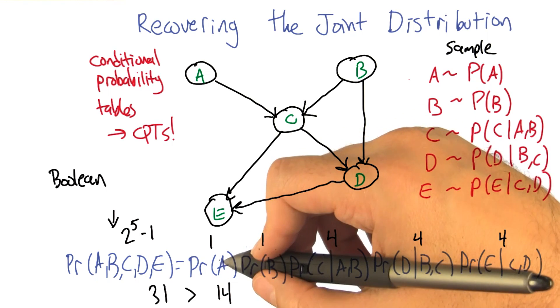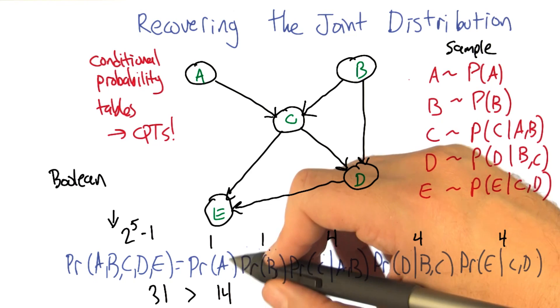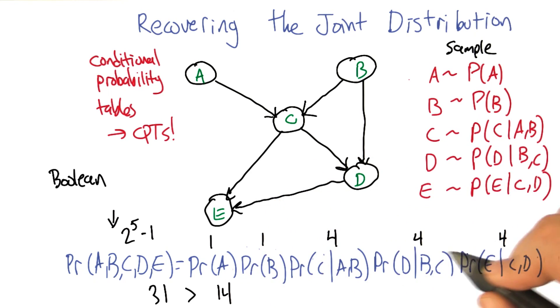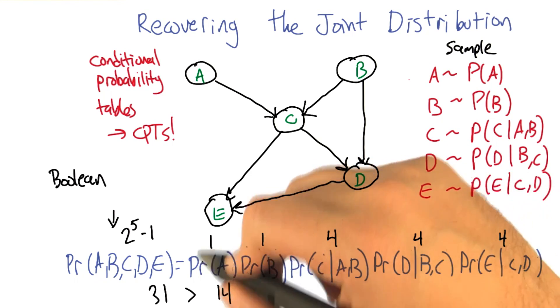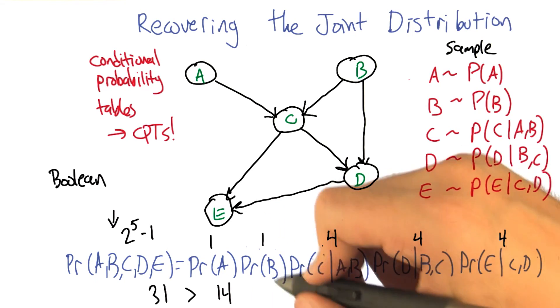Because it would be the product of the unconditionals. Yeah, which is what we'd get if we had just a set of weighted coins that are unrelated to each other, but each one has some probability of coming up heads.